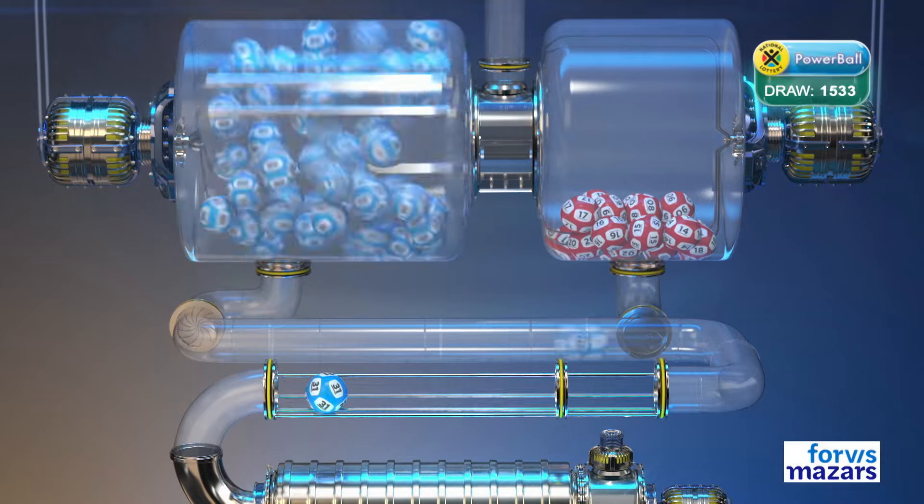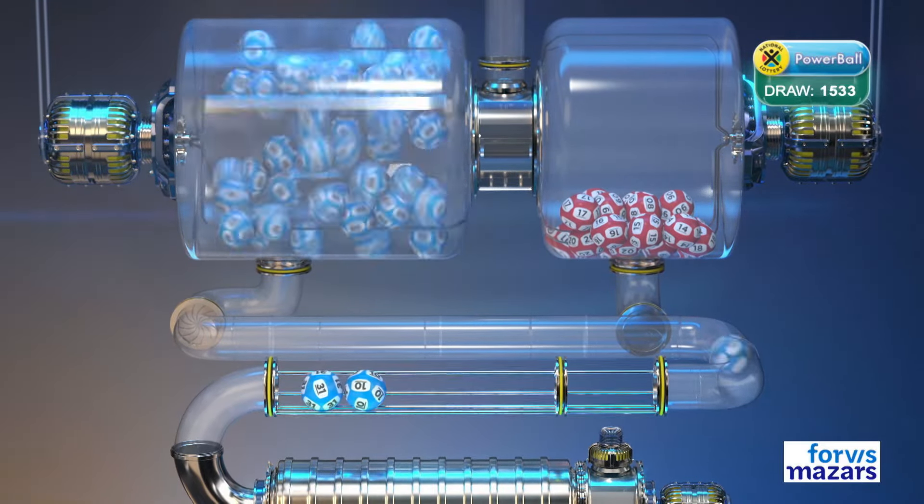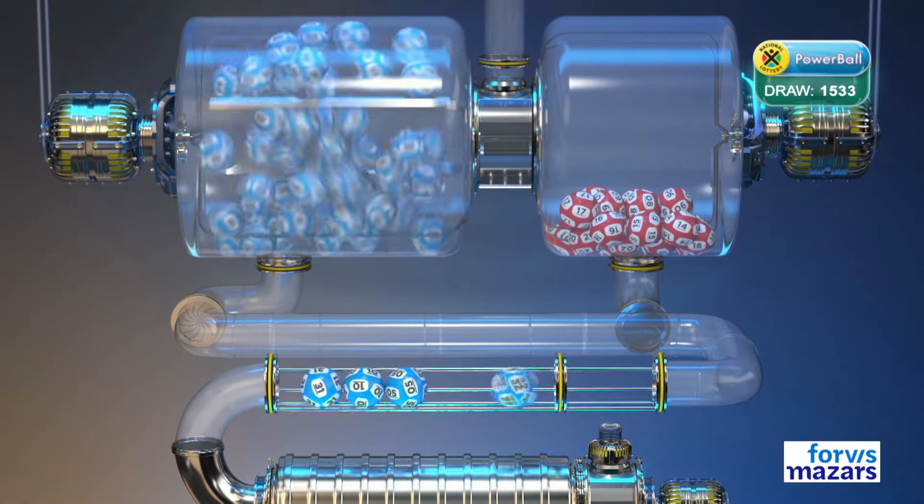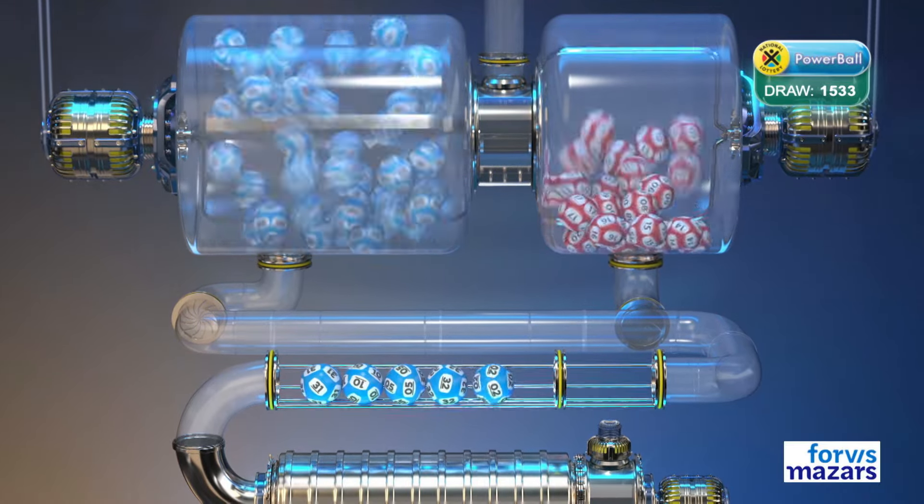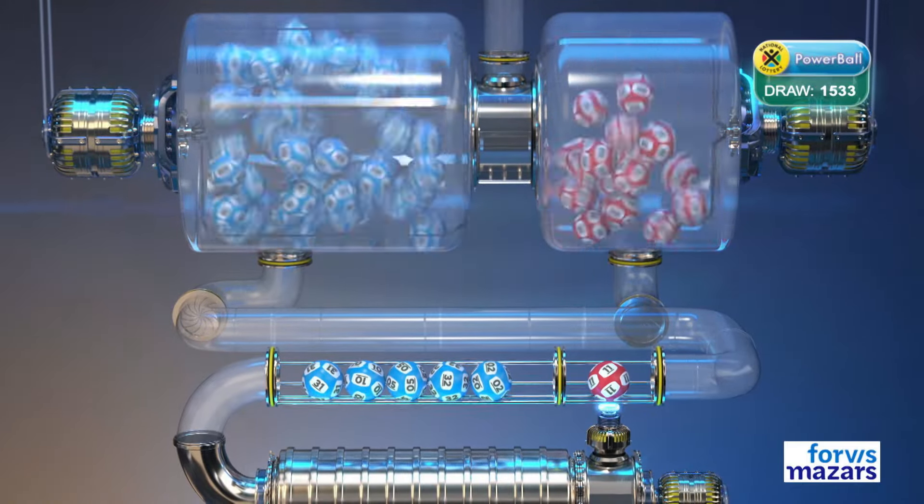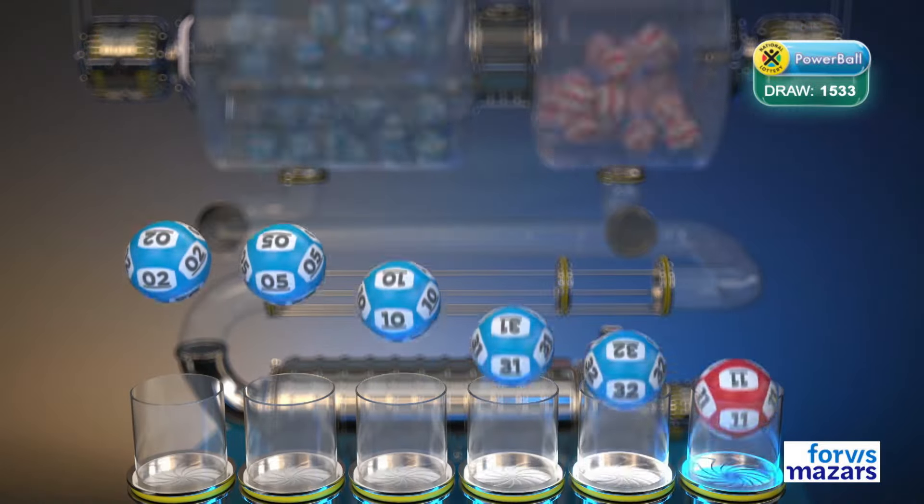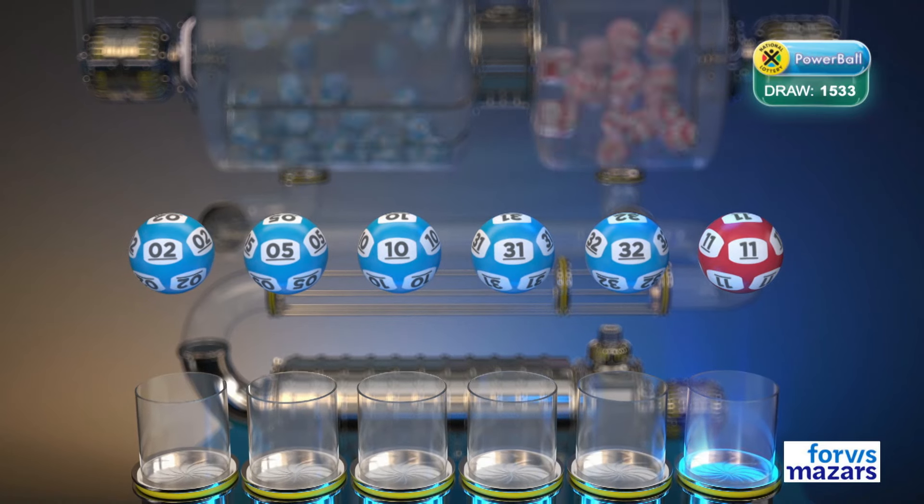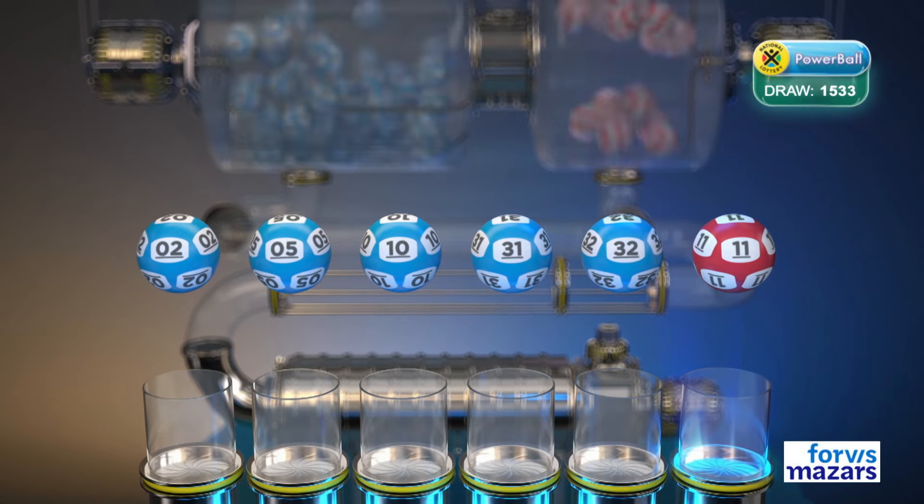Thirty-one, ten, five, thirty-two, two, and the Powerball is eleven. Let's recap these numbers in numerical order: two, five, ten, thirty-one, thirty-two, and the Powerball is eleven.